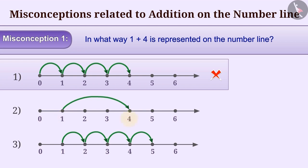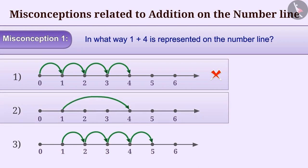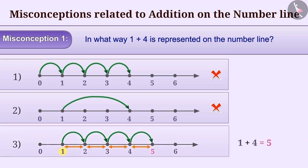Similarly, representing the sum of 1 and 4 by drawing arrows between 1 and 4 is also a misunderstanding. To show addition of 1 and 4 on the number line correctly, we have to start with the first number, then take 4 steps of unit distance each towards the right. By doing so, we reach number 5, and option 3 is the right answer.